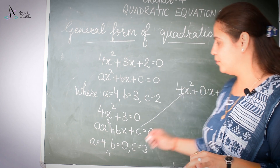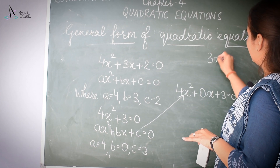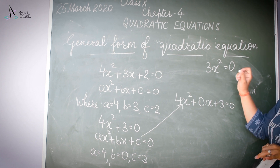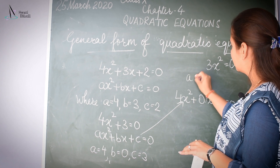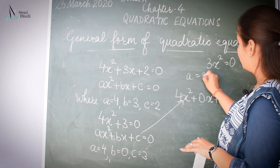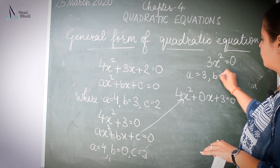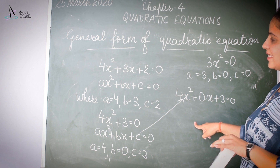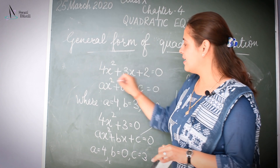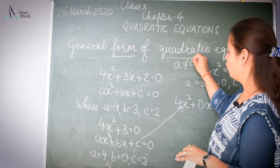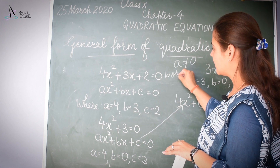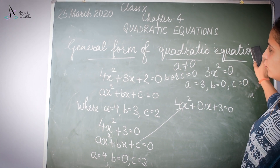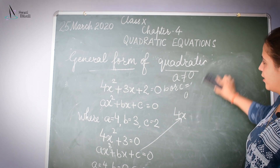Let us take one more example: 3X² = 0. Again, it is a form of quadratic equation because here A = 3, B = 0, and C = 0. So I can say that A can never be equal to 0, but B or C can be 0.